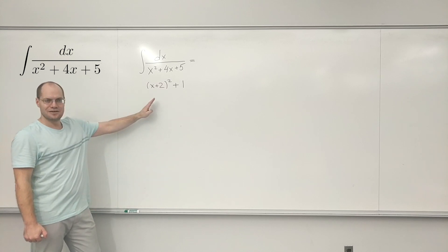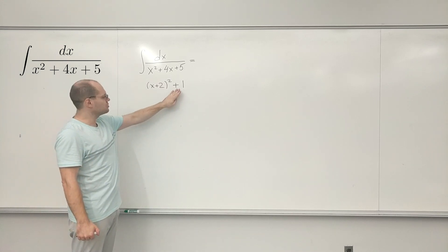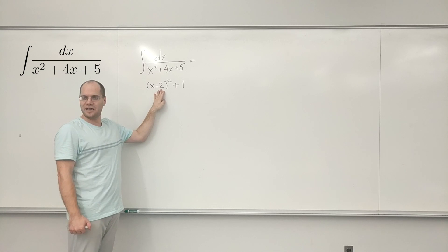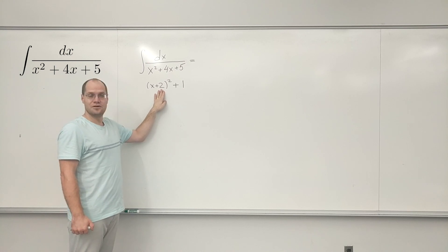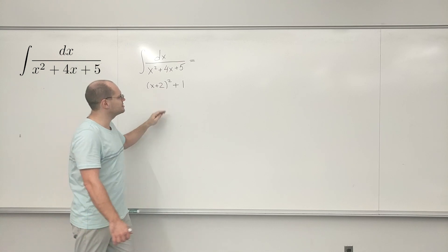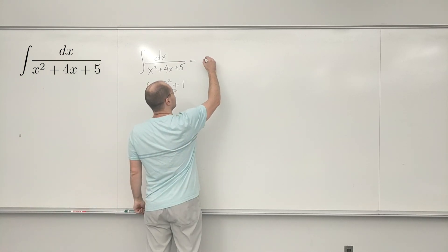So actually, we're pretty much done because we're looking at 1 plus something squared. So it's arc tan. So I will actually stop with all intermediate steps, not do any of the intermediate steps, and just write out the answer.